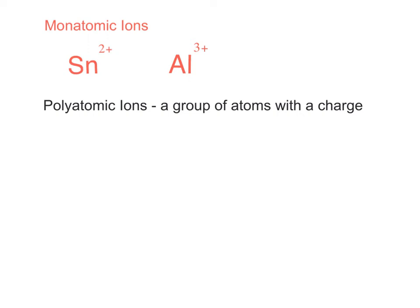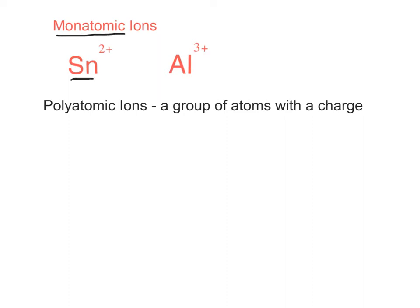In this video, let's talk about a special kind of ion. So far, we've been talking about monatomic ions — that's an ion where there's only one atom. For example, Sn with a 2+ charge, or Al with a 3+ charge.